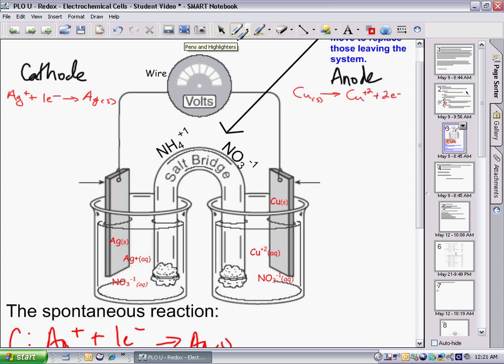So all of the cations, such as silver and ammonium in the salt bridge, will move towards the cathode. Positive ions, cations, will move towards the cathode.